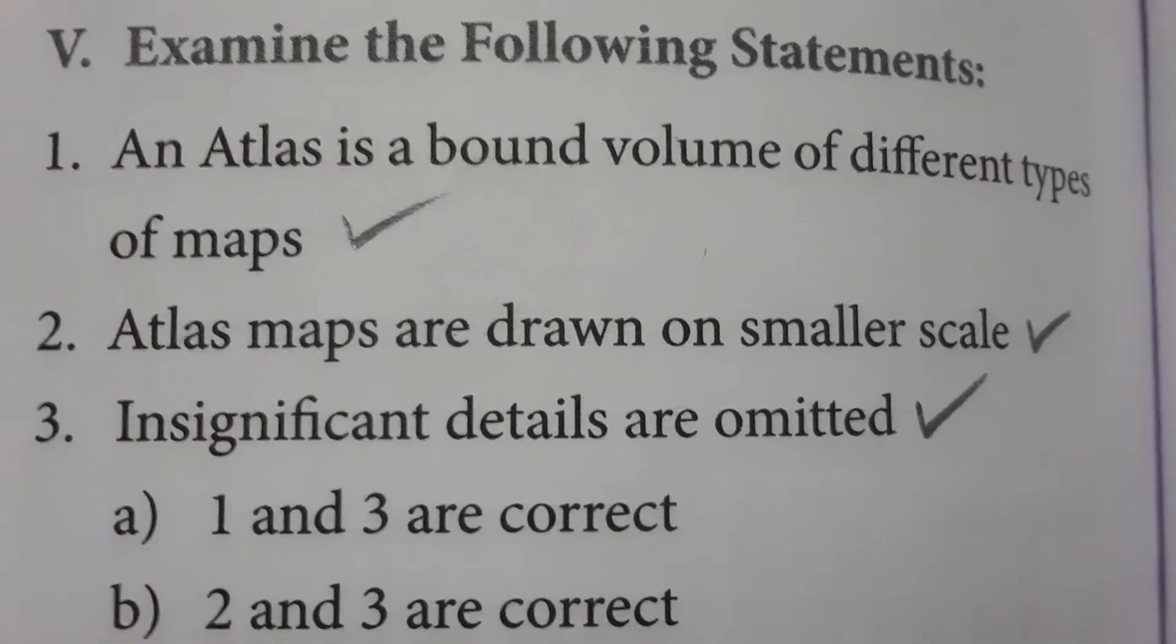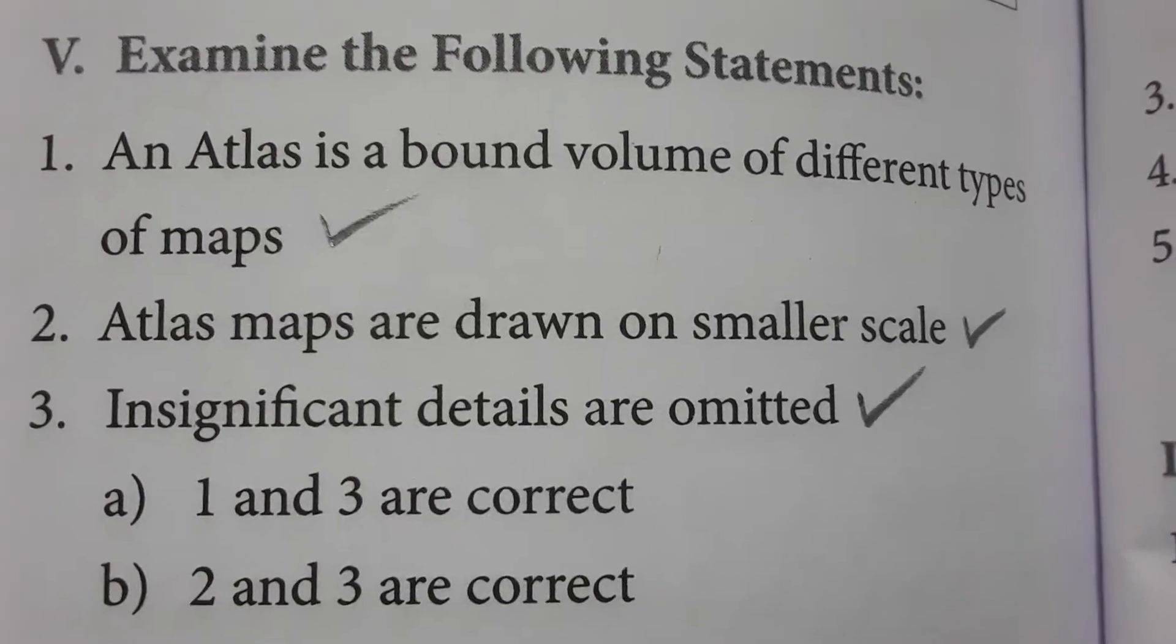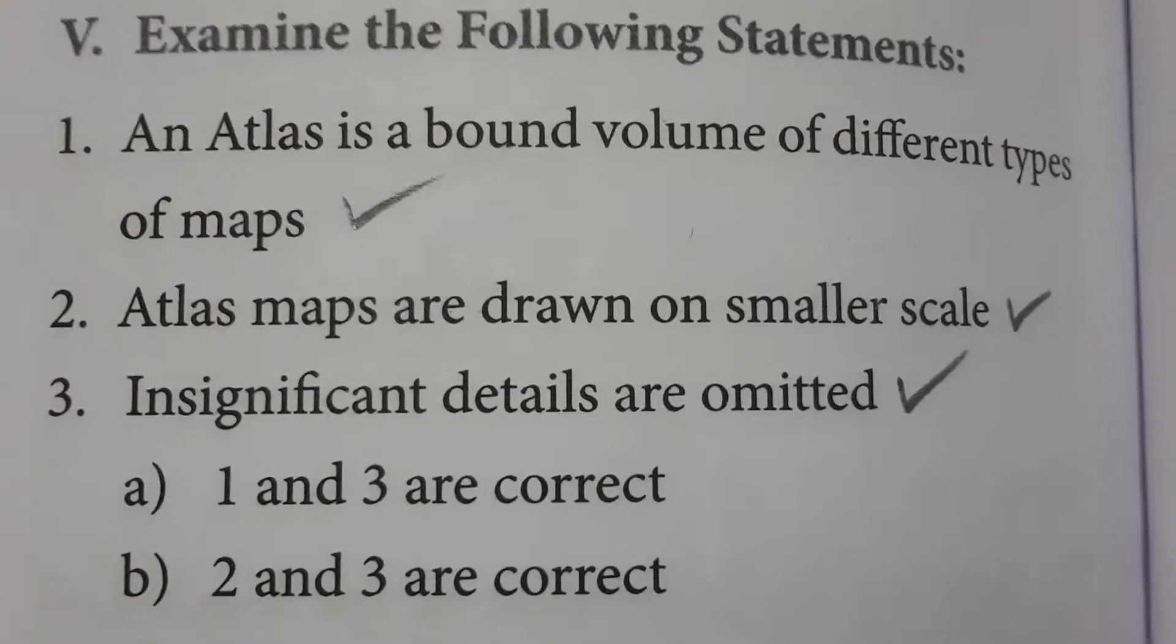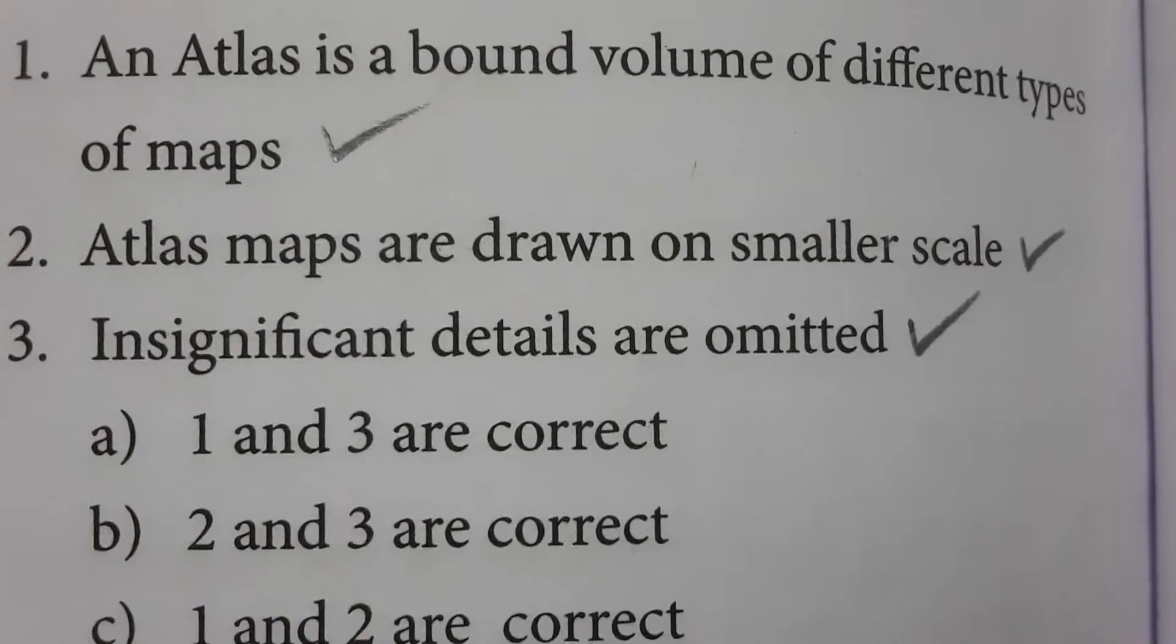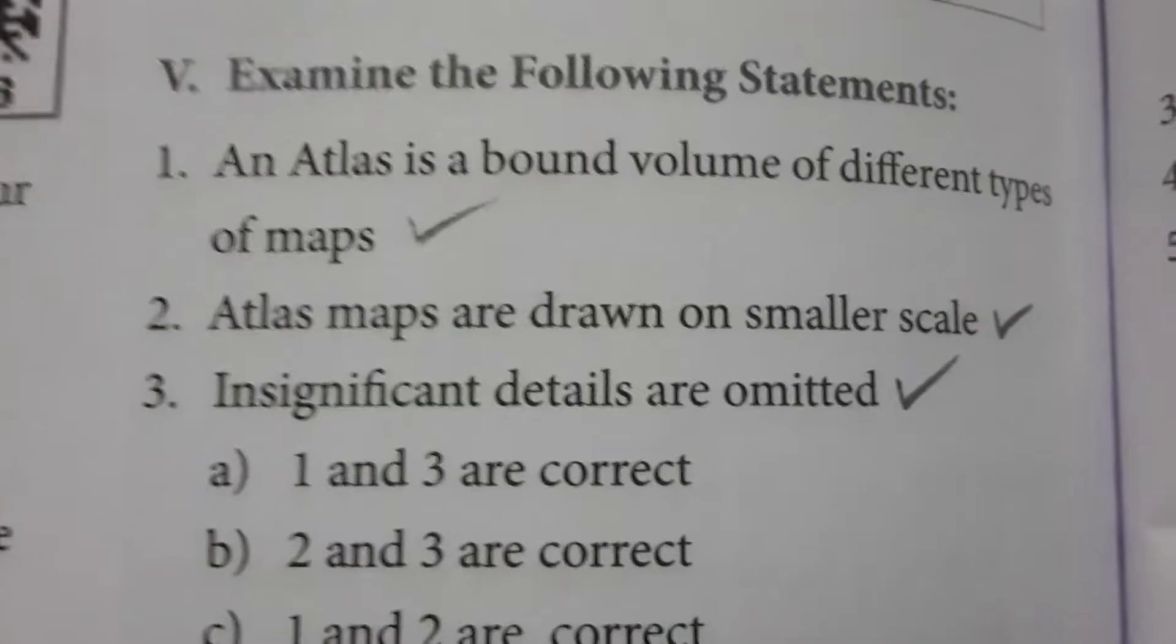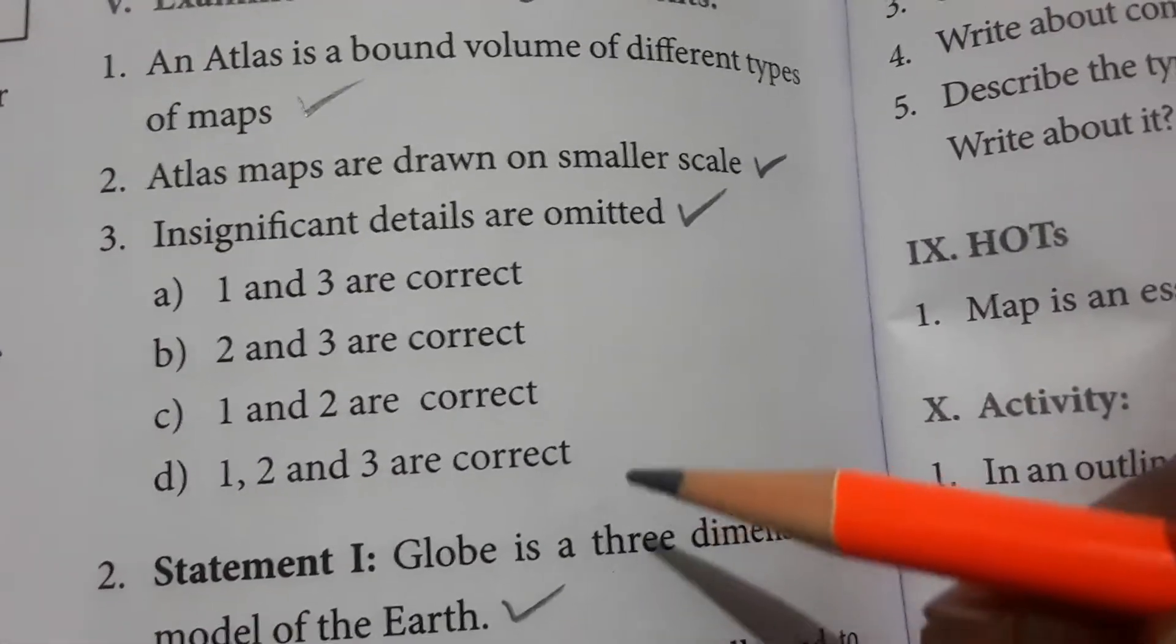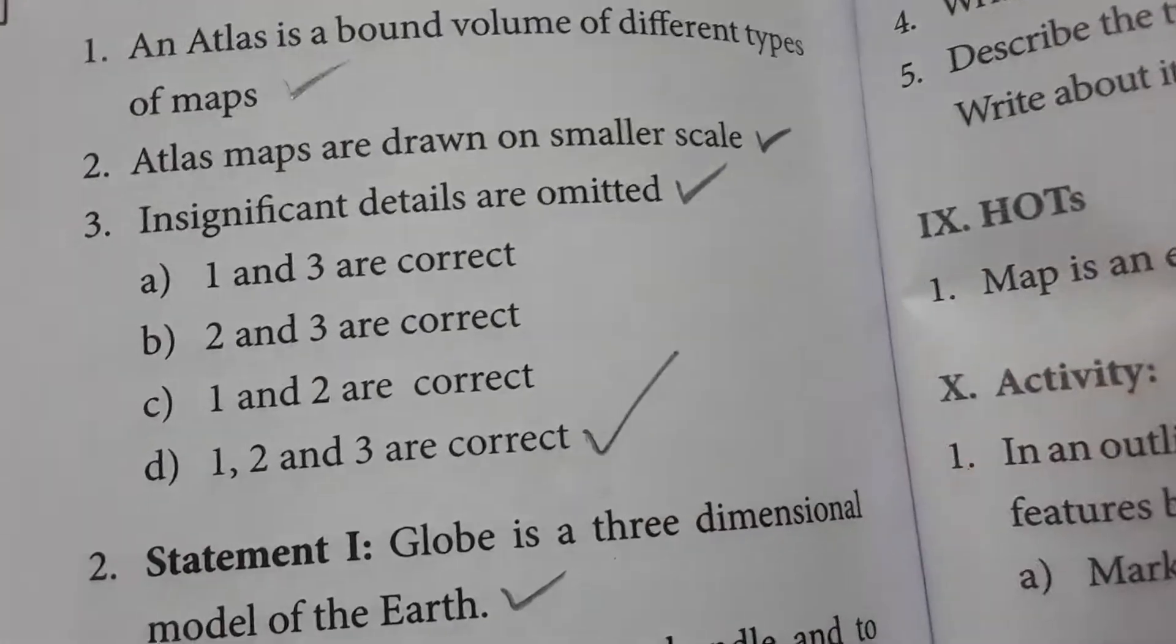Estimate the following: An atlas is a bound volume of different maps. Atlas maps are drawn on smaller scale. Insignificant details are omitted. These three are correct statements, so the answer is 1, 2, and 3 are correct.